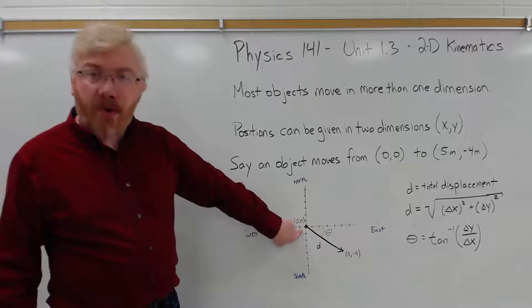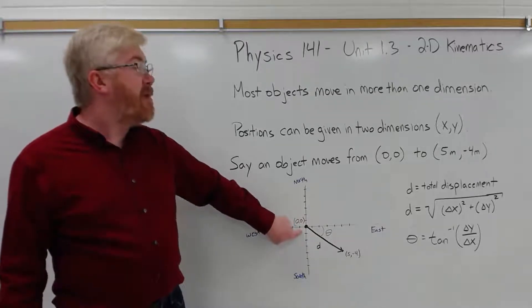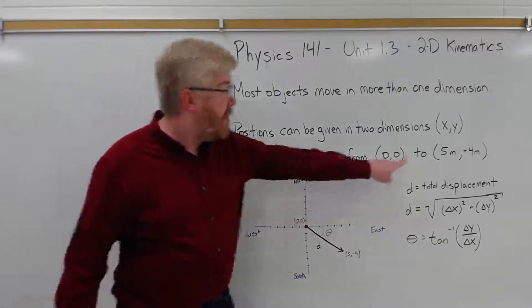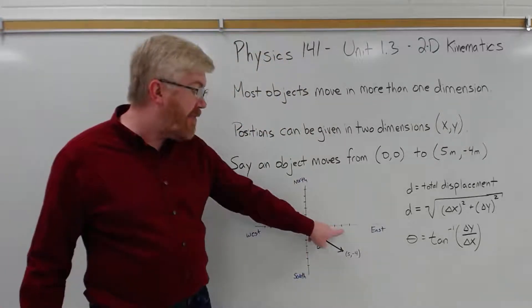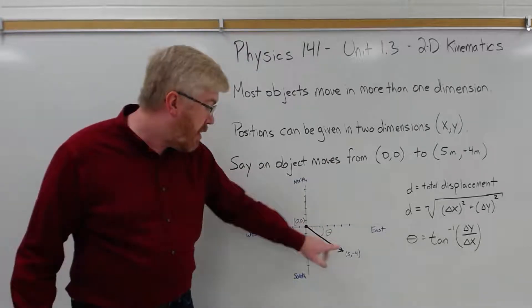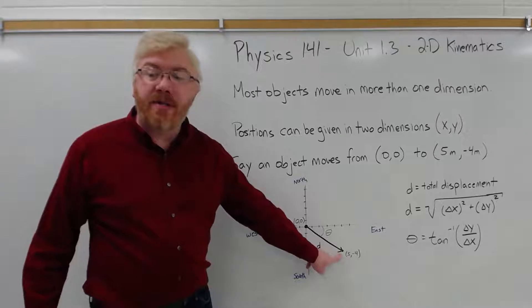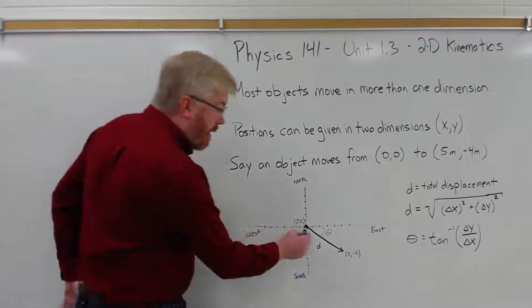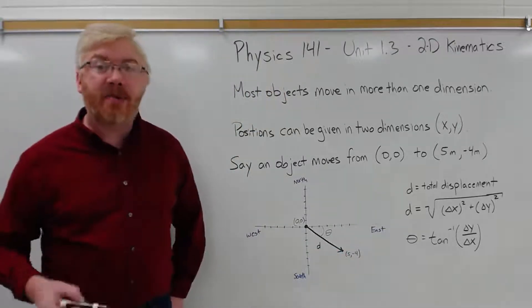So the object starts off at 0, 0, that's the origin, and moves to 5 meters, minus 4 meters. So it moves 5 meters, first one is the x motion, it moves 1, 2, 3, 4, 5 meters. And then minus 4 meters, 1, 2, 3, 4, so its final destination is here, at 5 minus 4. So the black line here shows you what its displacement is in two dimensions.